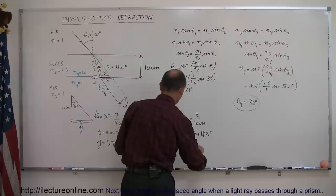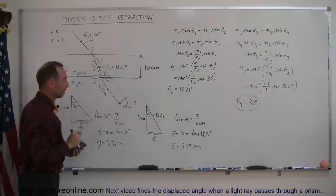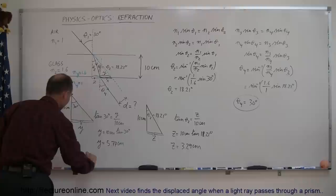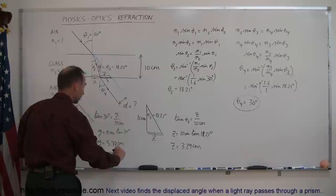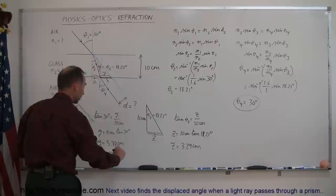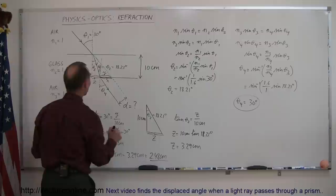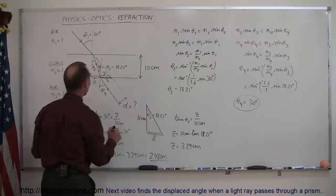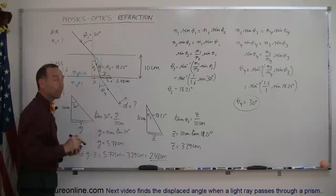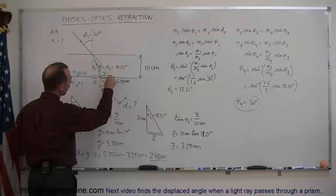Now we have y and z, so we can find x. Since x is simply y minus z, we have x equals 5.77 centimeters minus 3.29 centimeters, which gives x equals 2.48 centimeters.